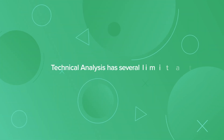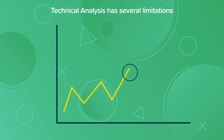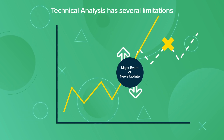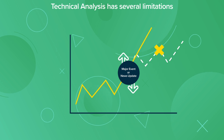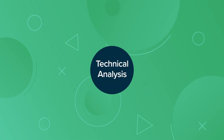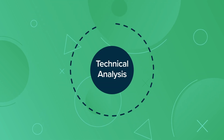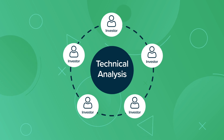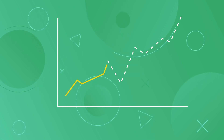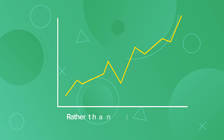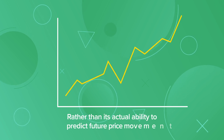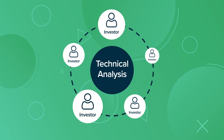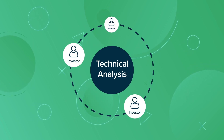Technical analysis has several limitations. First, a major event or news update can completely alter the security's landscape, nullifying all technical analysis. Additionally, technical analysis can be a self-fulfilling prophecy. If enough investors are using the same technical indicator, price movement may follow the indicator due to the popularity of the indicator, rather than its actual ability to predict future price movement. When this happens, investors may learn to act preemptively, which may undo the usefulness of the indicator.